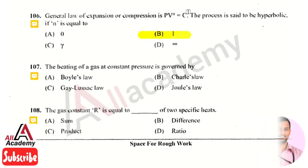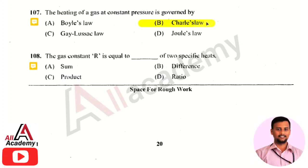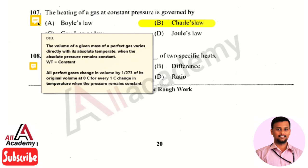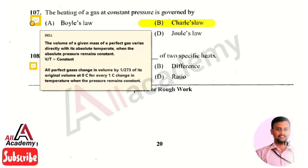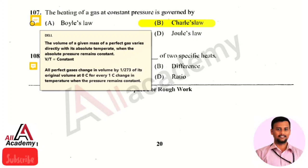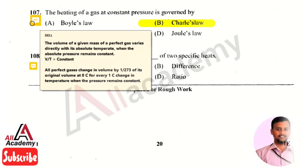When n equals one in PV raised to n equals constant, the process is called hyperbolic. The next question: the heating of a gas at constant pressure is governed by Charles' Law. Charles' Law states that the volume of a given mass of a perfect gas varies directly with its absolute temperature when the absolute pressure remains constant. Another statement: all perfect gases change in volume by 1/273 of their original volume at zero degrees Celsius for every one degree change in temperature when pressure remains constant.